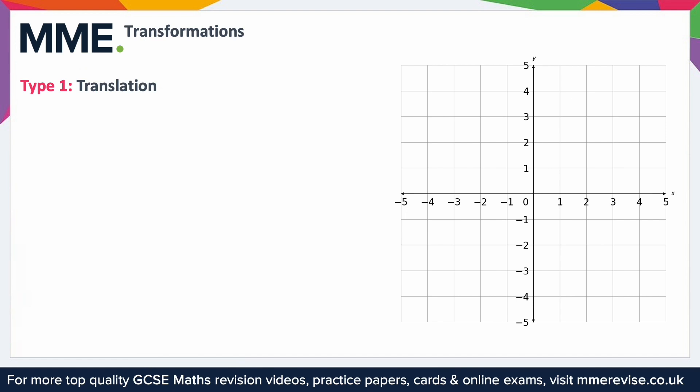Say for example, we had a triangle that looked a little like this. Okay, so this is shape A and we want to translate it by the vector minus three, two.